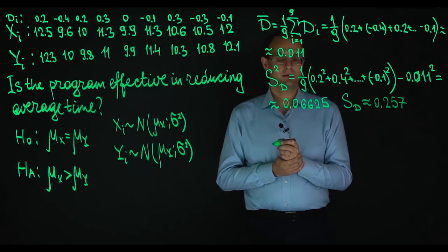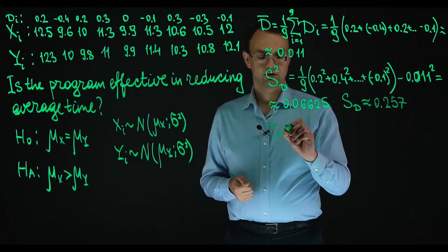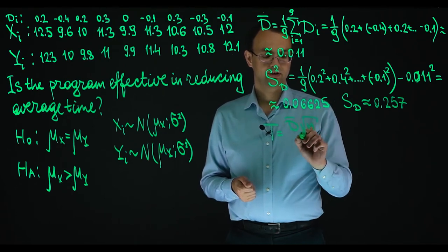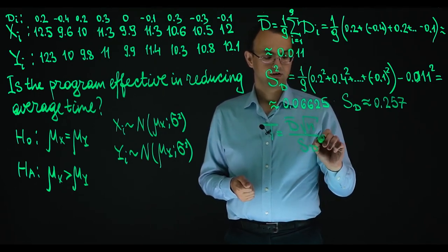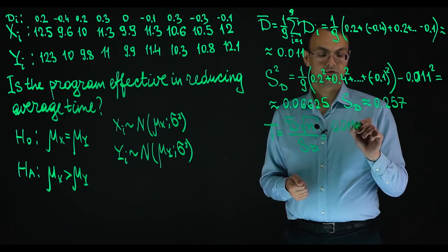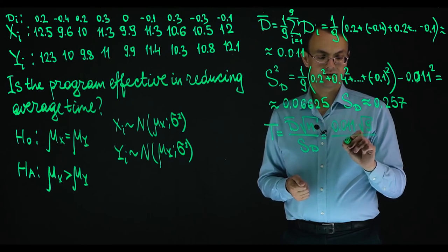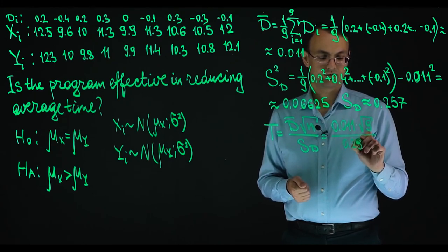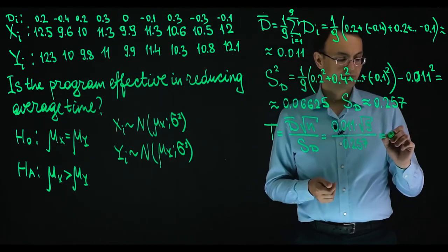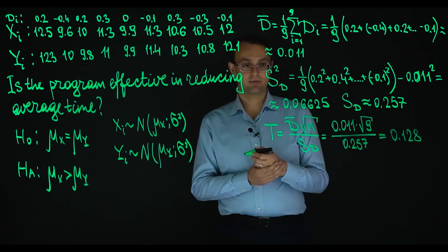The test statistic is d-bar times the square root of n divided by s_d. With d-bar = 0.011, n = 9, and s_d = 0.257, the test statistic is approximately 0.128. This is the observed value of the test statistic.